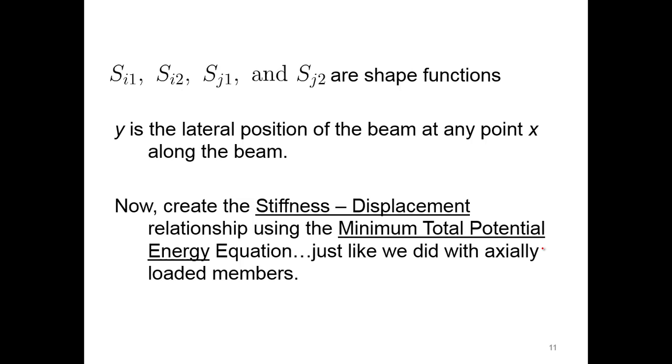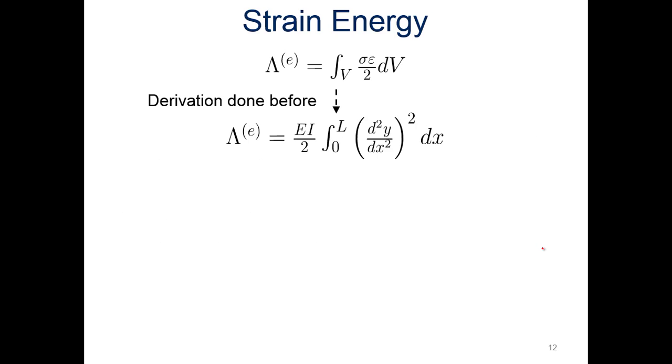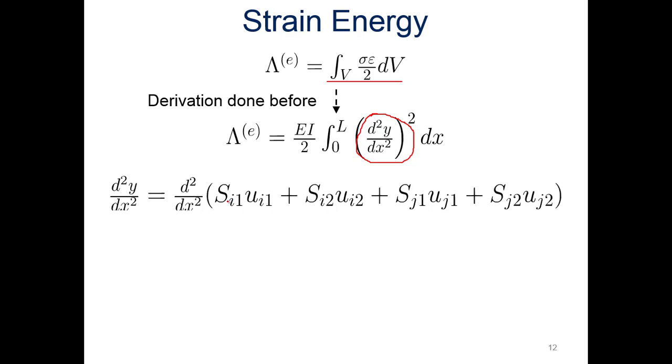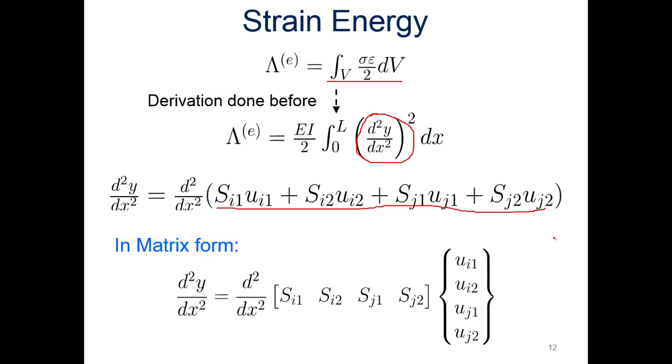With that, we're now going to create the stiffness or displacement relationship using the minimum total potential energy equation, just like we do with axially loaded members. Taking the strain energy equation, if we integrate that over the volume, we have the stress times the strain divided by two. We're substituting that—we've done this derivation before—but ultimately you end up with the second derivative of Y with respect to X squared. And we have that Y equation. We just solved for it, so here we are in terms of the shape functions and the displacement, lateral displacement and rotation that we have at node I and J.